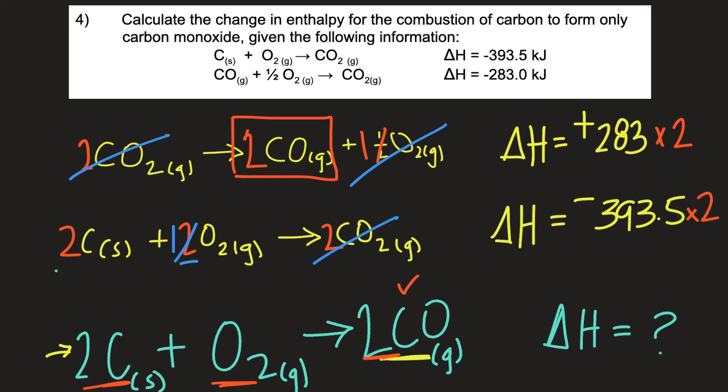So in this aqua color I'll underline what we have left. On our reactant side we have two carbon solids. We have one oxygen gas. That's it. And then on our product side we have two carbon monoxide gases. And if you look down to the final overall equation that's exactly what we have.